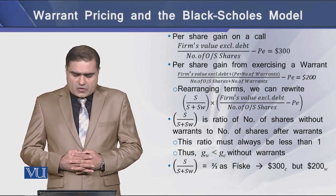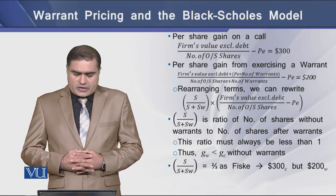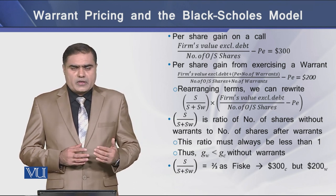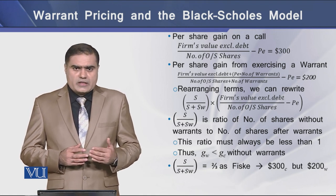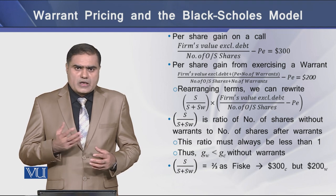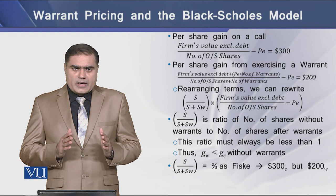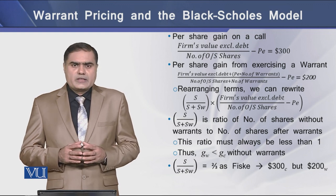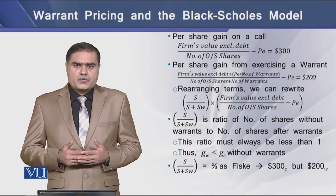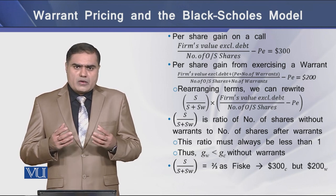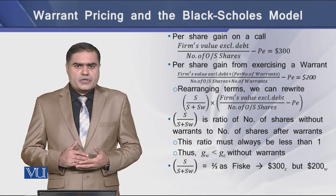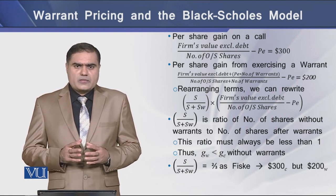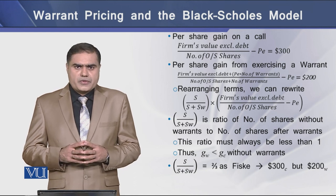There is a case where the ratio of existing capital to new capital is equal to 2/3, as a new partner enters the firm. The new partner was earlier earning a gain of $300 on the call per share, whereas the gain under the warrant is $200 per share, because the amount of capital has been increased from 2 shares to 3 shares. This decline in gain per share is termed the dilutive effect due to the issuance of the warrant.